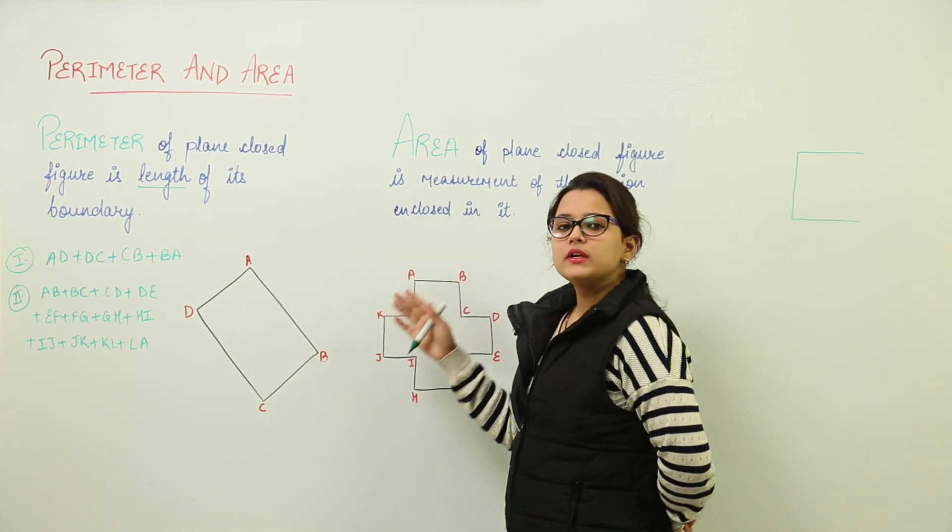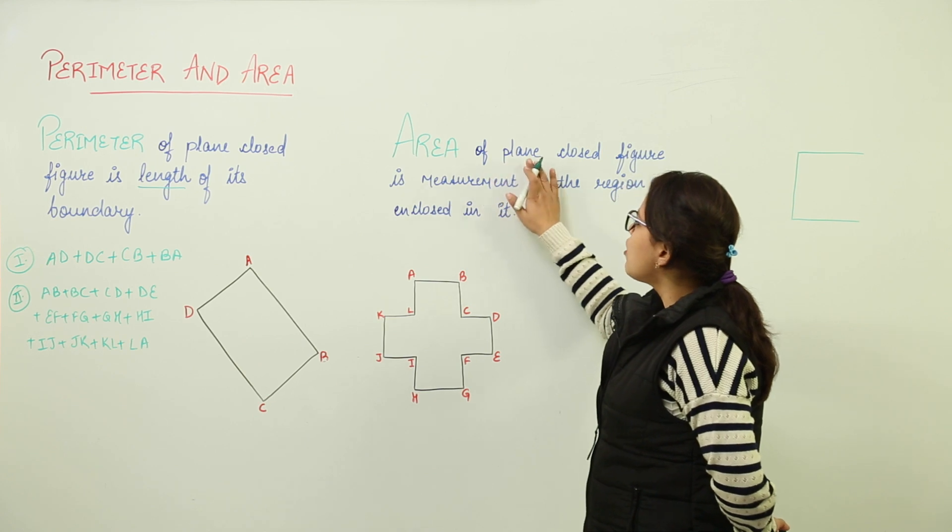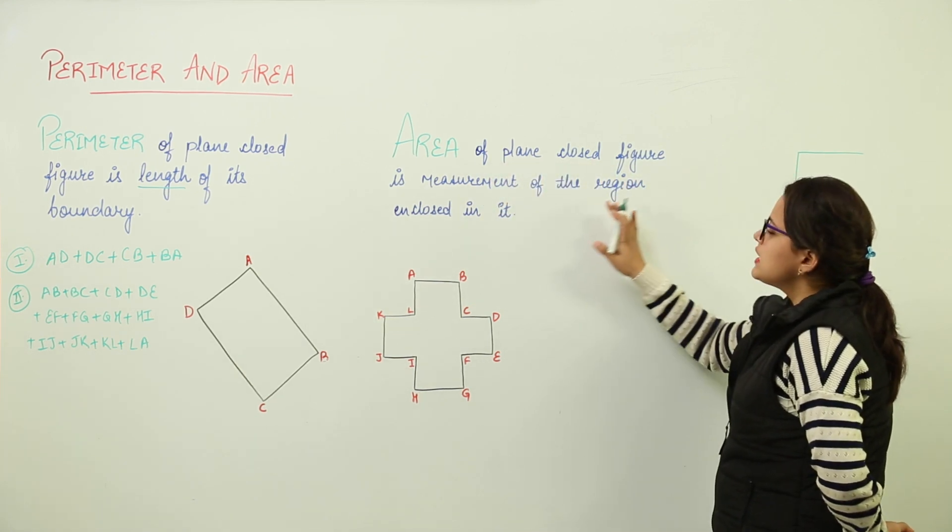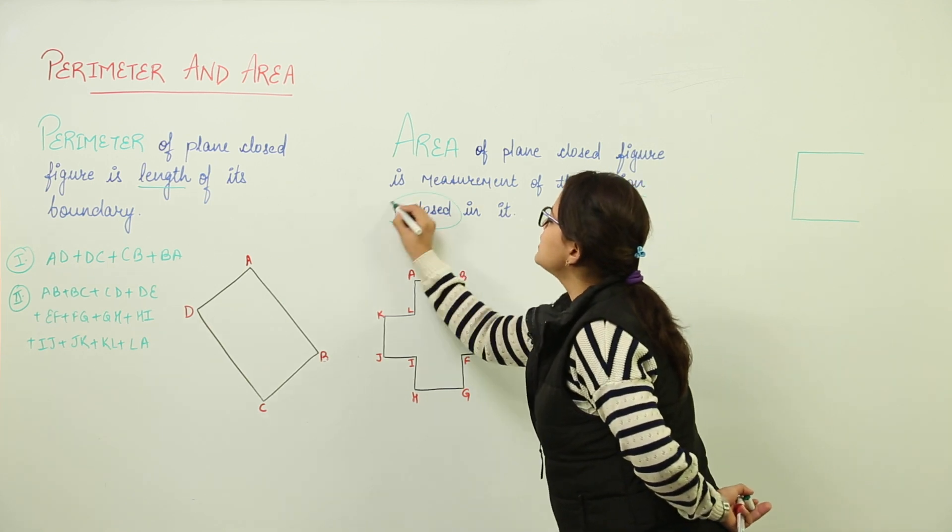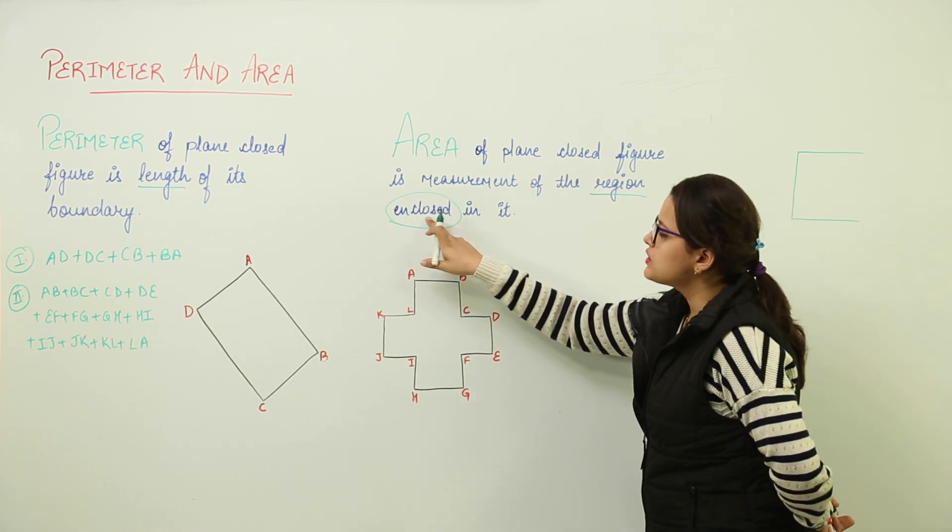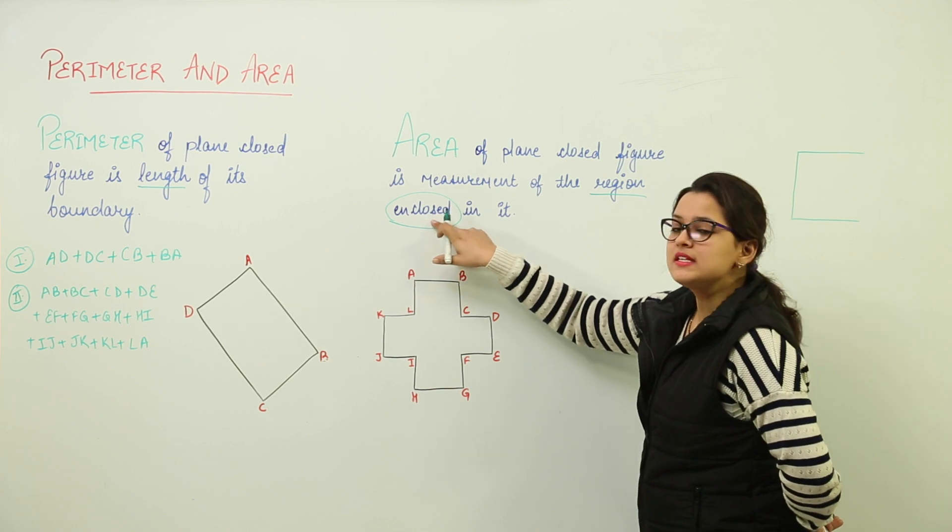Now, let us discuss what is area. Area of a plane closed figure is measurement of the region enclosed in it. Please mark this definition part over here that is enclosed.